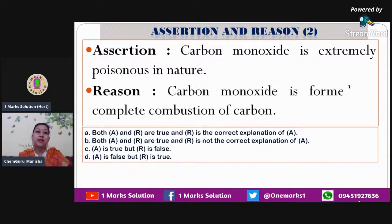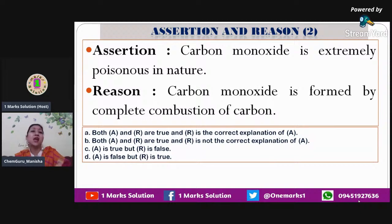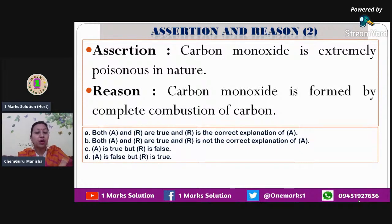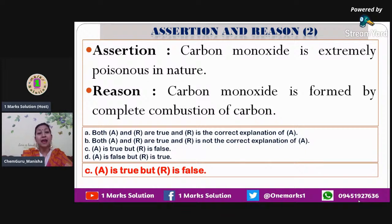The second question: assertion is that carbon monoxide is extremely poisonous in nature. The reason explains that carbon monoxide is formed by complete combustion of carbon. Whenever complete combustion happens, carbon dioxide has to form — not carbon monoxide. So I would go with option C, where assertion is definitely true because carbon monoxide is poisonous, but the reason is false because carbon monoxide is not formed by complete combustion of carbon.